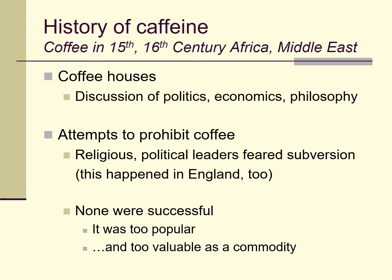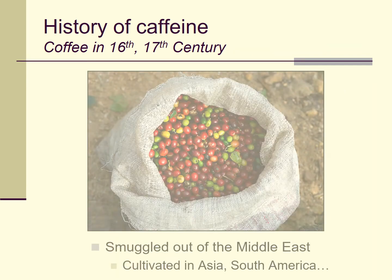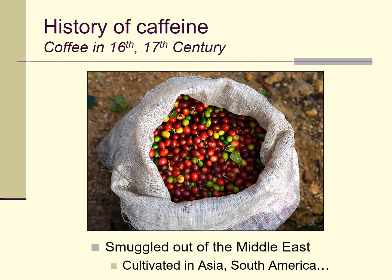Several attempts over the centuries to prohibit coffee were made, but none were very successful because coffee was a popular beverage people just liked too much. It was also a very valuable commodity — if you wanted to prohibit coffee, you had to contend with all the people making money from trading in it, and usually money wins out over politics. Over time, smugglers got coffee out of the Middle East away from the countries that controlled it and began to spread it into other parts of the world, which is why coffee is now planted all around the world.